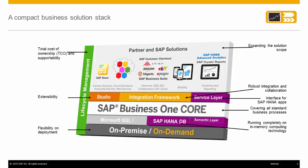SAP Business One is an all-inclusive solution. SAP Business One core functionality is available both on-premise or cloud-based. Regardless of how SAP Business One is implemented, you have the same integration options available.